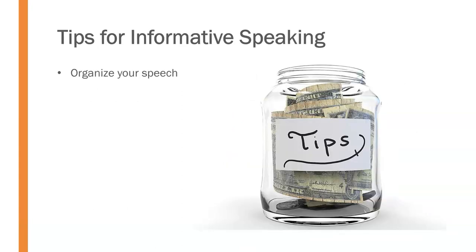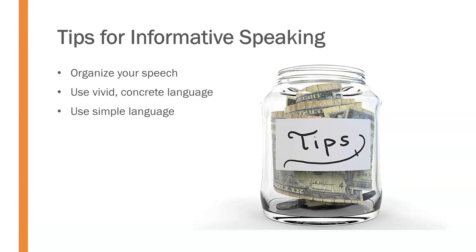Another tip is that we have to effectively organize our speech. Audiences are more inclined to listen, follow along, and retain information if we've organized it well. For informative speaking, we want to use vivid, concrete language — very specific language, not a lot of abstraction. We want to use simple language as much as possible. In informative speaking, we're trying to share an idea and help people understand something, so we don't want to impress them with fancy vocabulary. We're trying to share it in a way they will easily understand and retain.